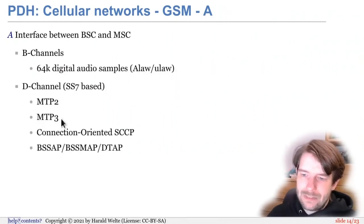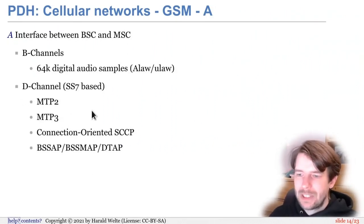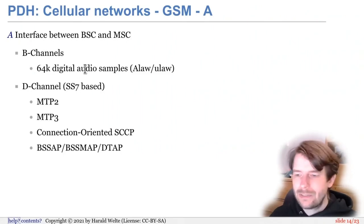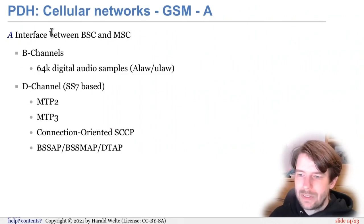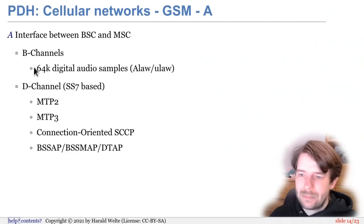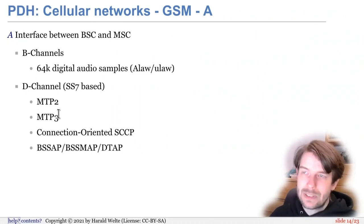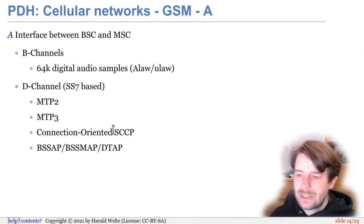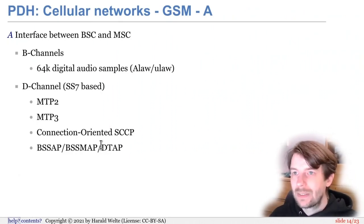On the A interface, it's a different protocol stack. B channels are normal B channels like in circuit-switched landline telephony — transcoding has already happened next to the BSC. Between BSC and MSC, we already have 64-kilobit normal A-Law or U-Law audio. On the D channel, we have MTP2 and MTP3 like SS7 between telephone exchanges, but with new higher-layer protocols: connection-oriented SCCP and then the BSS-AP, BSS-MAP, and DTAP stack for GSM signaling.